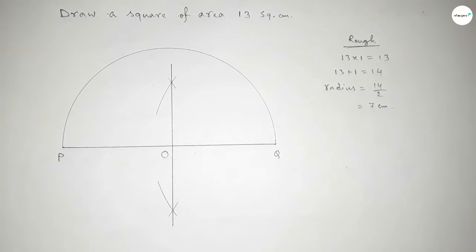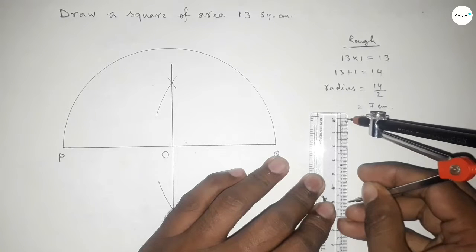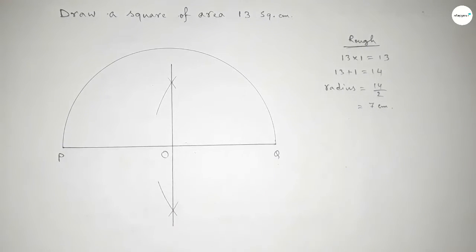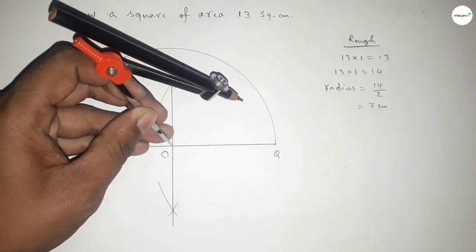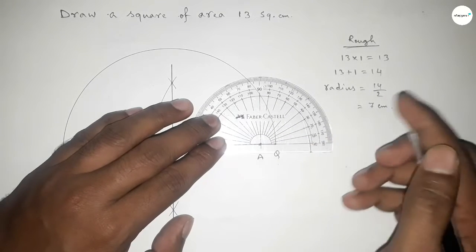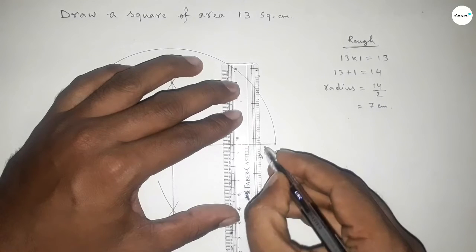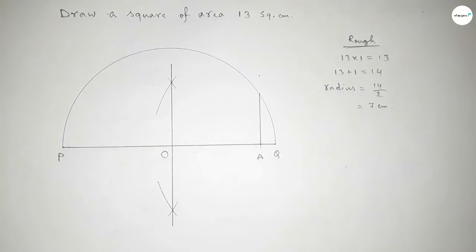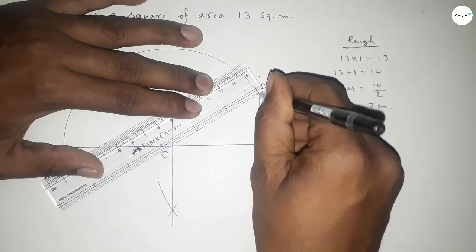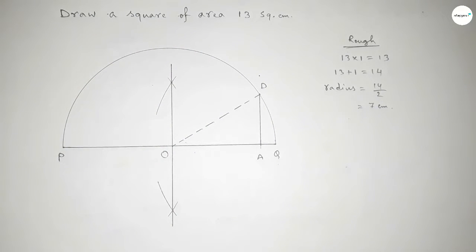Next, take a length of 6 centimeters using a scale and mark point A on PQ. We draw a 90-degree angle at point A using a protractor. Extending this perpendicular line meets the semicircle at point D. OD is also a radius of the semicircle, equal to 7 centimeters.